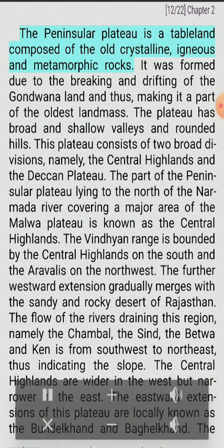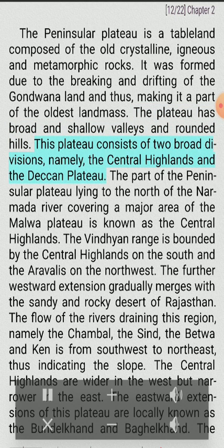The Peninsular Plateau is a tableland composed of old crystalline, igneous and metamorphic rocks. It was formed due to the breaking and drifting of the Gondwana land, making it a part of the oldest landmass. The plateau has broad and shallow valleys and rounded hills, and consists of two broad divisions: the Central Highlands and the Deccan Plateau. The part of the Peninsular Plateau lying to the north of the Narmada River, covering a major area of the Malwa Plateau, is known as the Central Highlands.